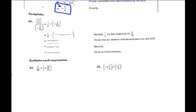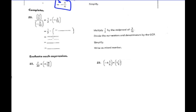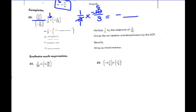Let's try a few of these. 1 half divided by negative 3 tenths. Keep it, change it, flip it. Keep the first fraction — 1 half. Change the problem to multiplying by the multiplicative inverse. The multiplicative inverse of 3 tenths is 10 thirds, and yes, it is negative. One negative means the product is negative. 2 and 10 have a factor of 2 in common: 2 divided by 2 is 1, 10 divided by 2 is 5. I get negative 5 thirds, which is negative 1 and 2 thirds.